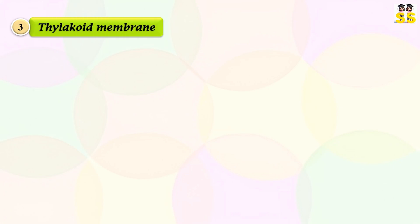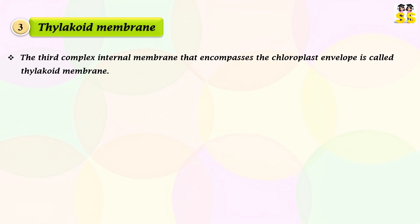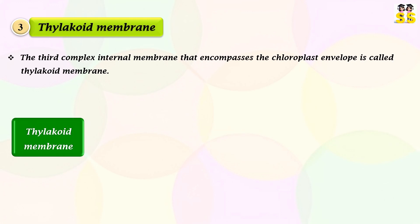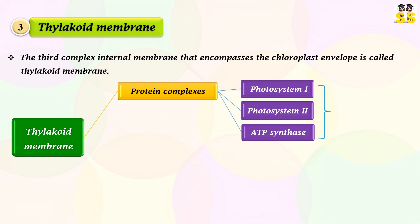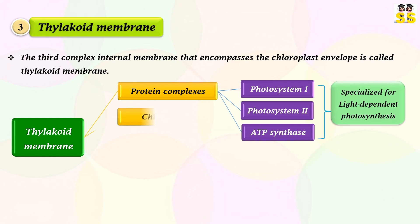One of the most distinctive features of chloroplast is its thylakoid membrane. It is the third complex internal membrane that encompasses the chloroplast envelope. This membrane houses different protein complexes, including photosystem 1, photosystem 2, and ATP synthase, which are specialized for light-dependent photosynthesis.